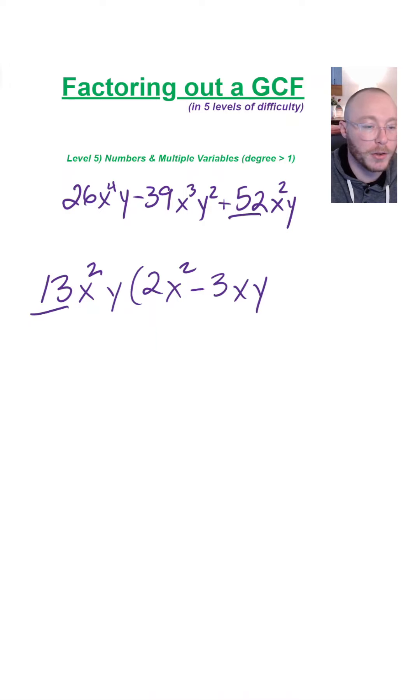Then we've got 52 divided by 13. This is going to be positive 4. x squared divided by x squared, y divided by y cancels.